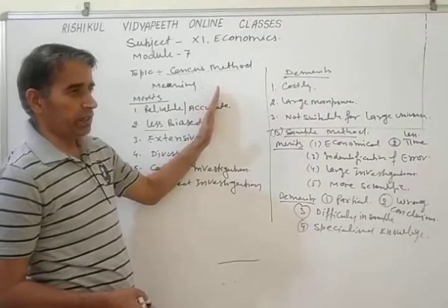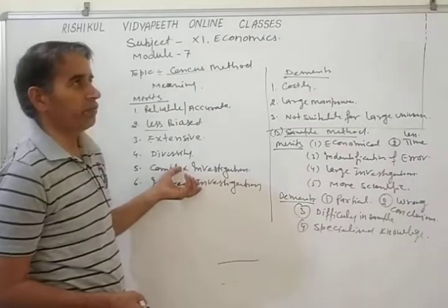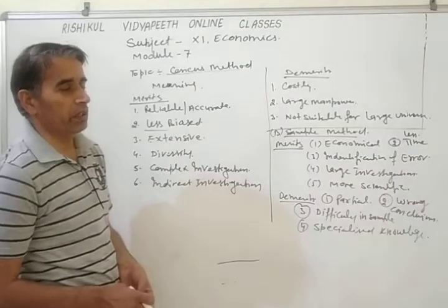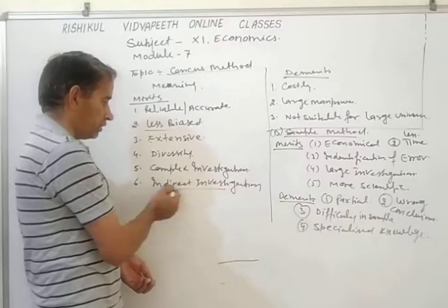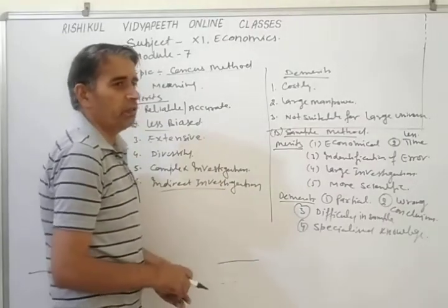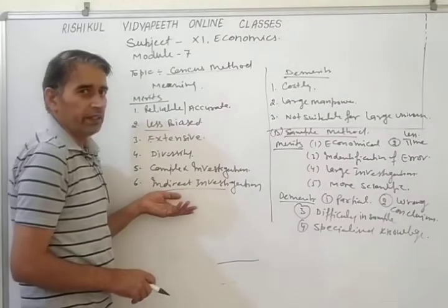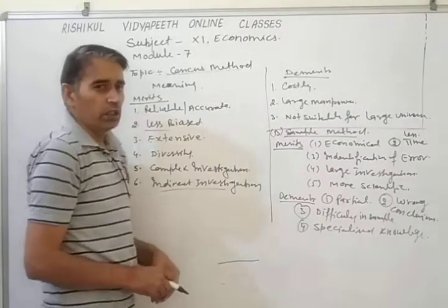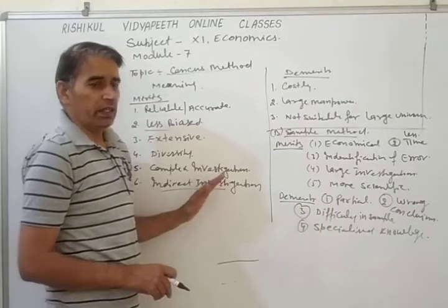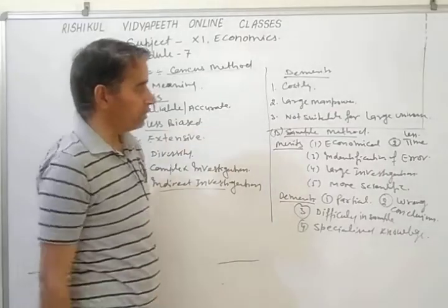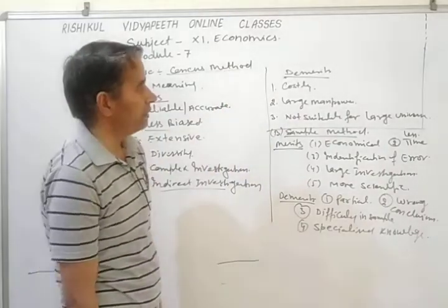Last merit is indirect investigations. Indirect investigations means some indirect information is collected. For example, when under the census method we count the population of India, we simultaneously also collect information about unemployment, poverty, education, and income levels. Different types of other information are indirectly gathered by investigators, which are used to solve other problems without needing to collect data again.